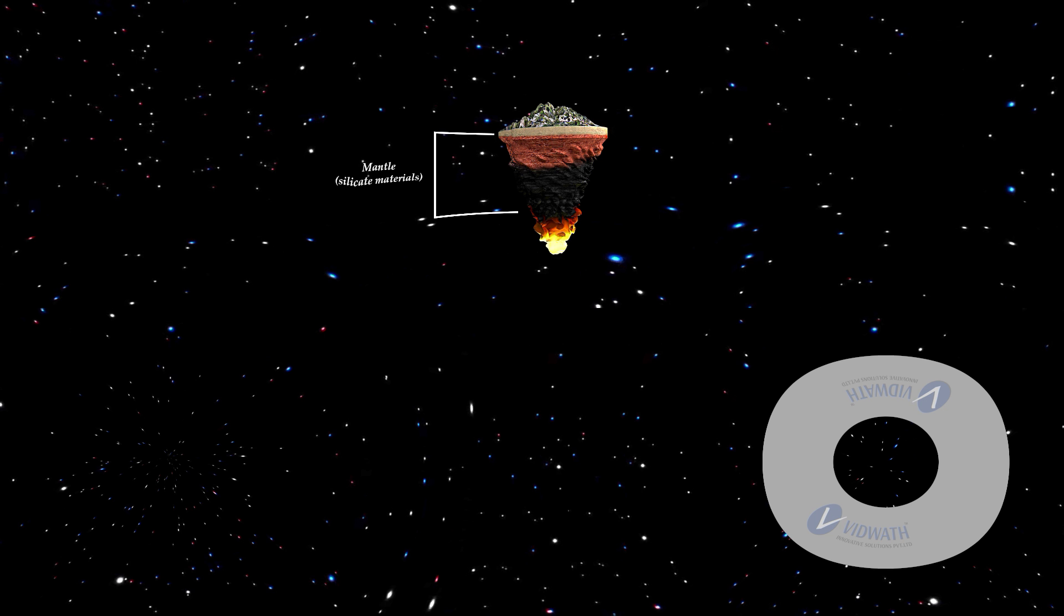The lower mantle extends beyond the asthenosphere. It is in solid state. It is composed of solid rock and magma. It forms 83% of the Earth's volume. The outer layer of the mantle is partly somatic while the inner layer is composed of only somatic ultra-basic rocks.